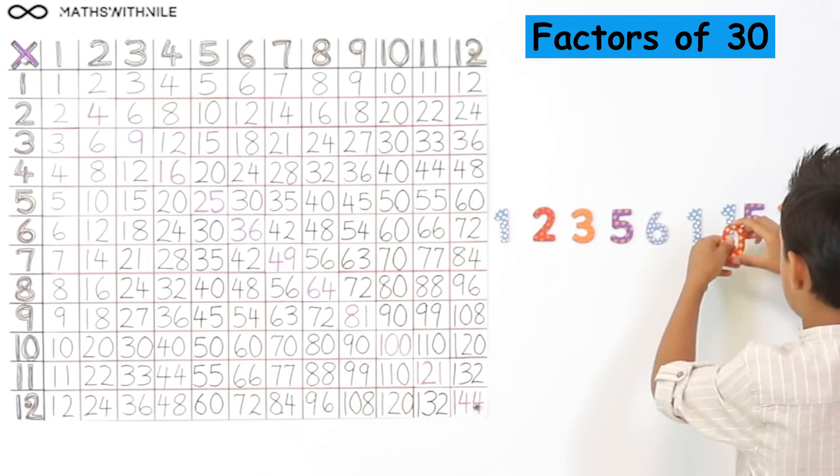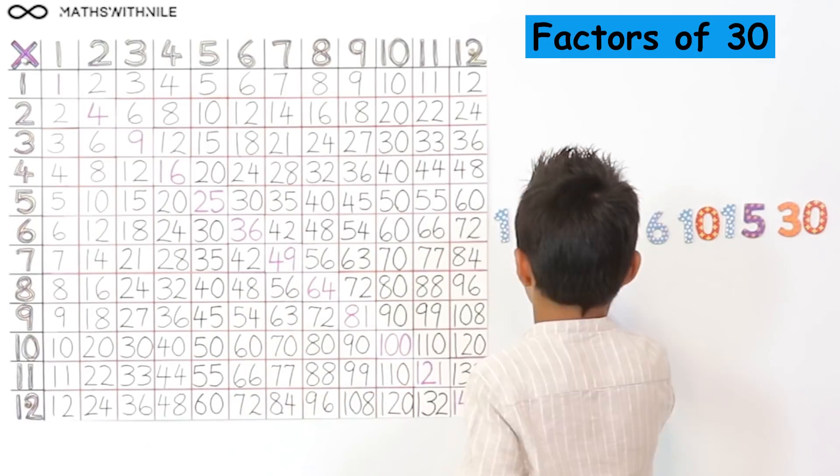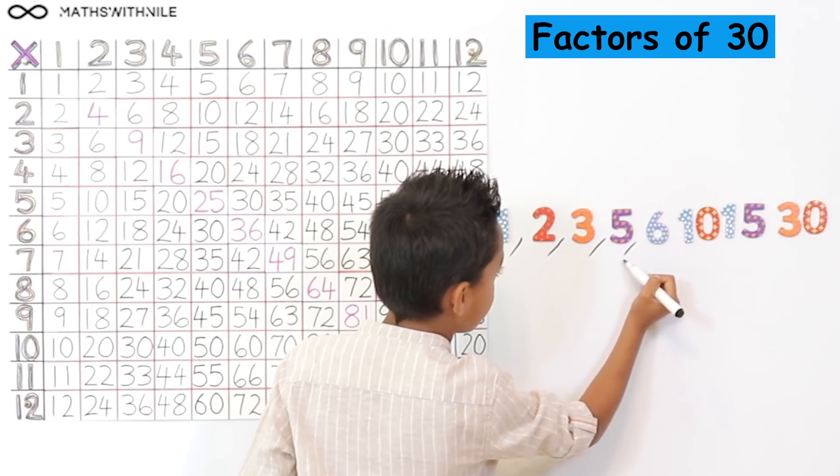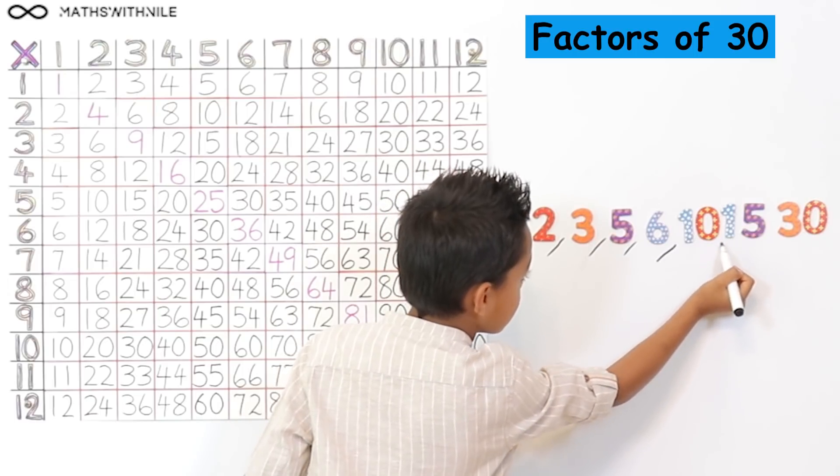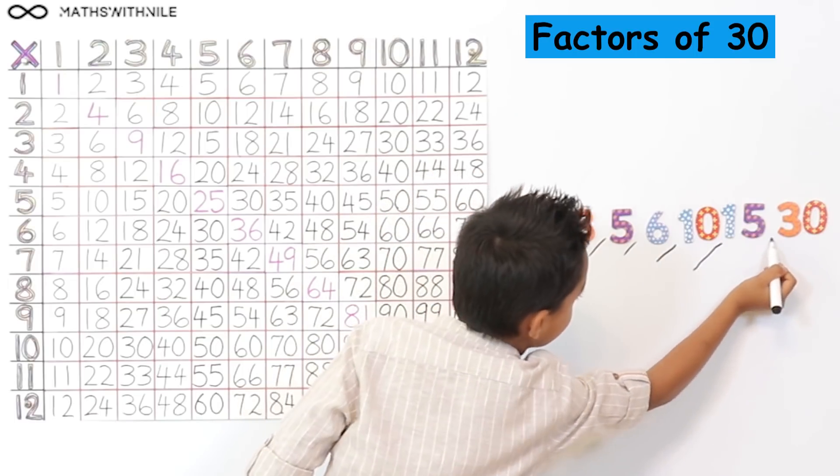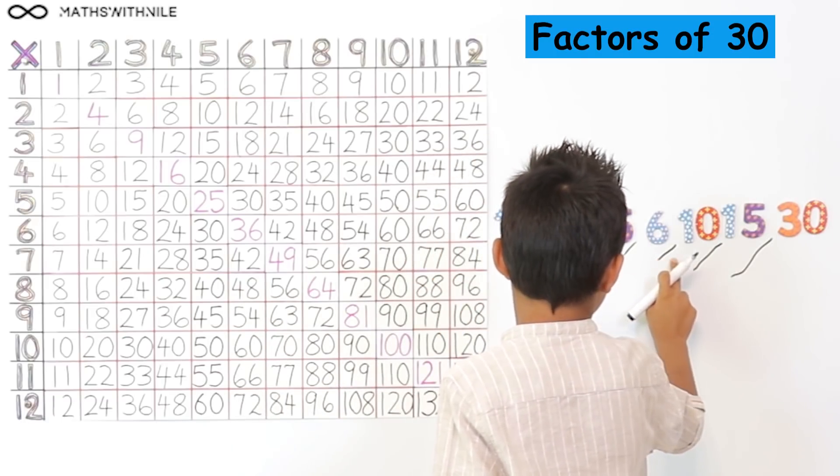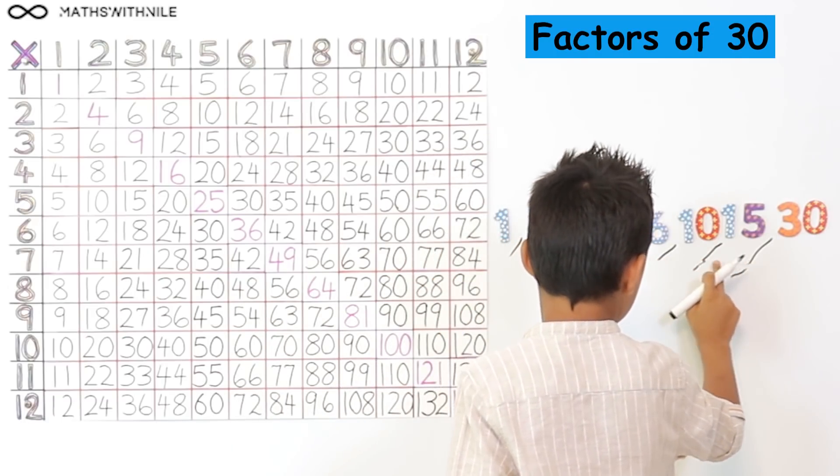1, 2, 3, 5, 6, 10, 15 and 30. Very good. So those are all the factors of 30. Excellent.